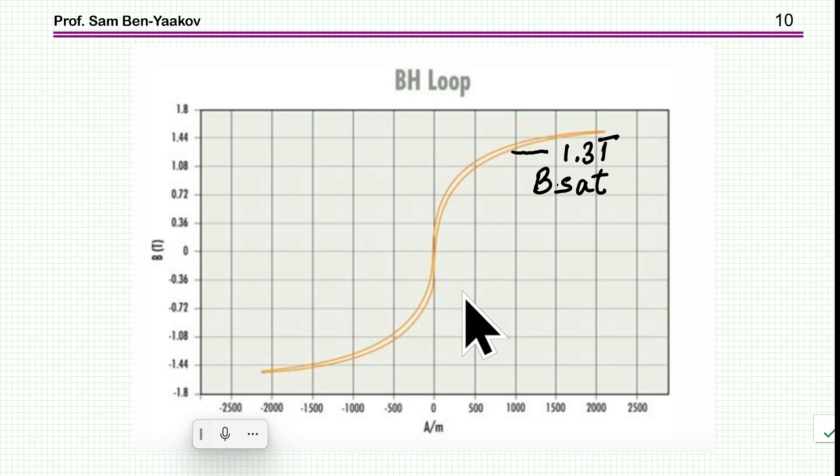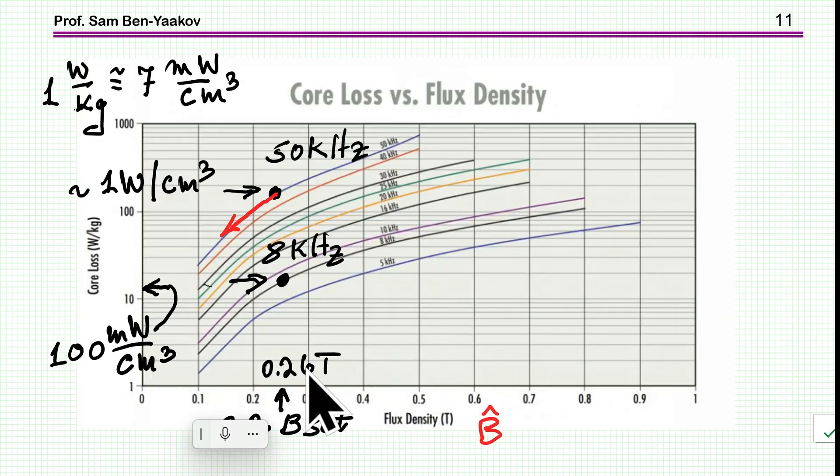If I'm setting the B ripple to be 0.2 of this level, this will be 0.26. And here are the losses. I can see that we're in bad shape here. For example, if I'm talking about the level of around 100 milliwatt per centimeter square, it's only 8 kilohertz. If I go to 50 kilohertz, then it's 1 watt per centimeter square. This is given in watt per kilogram, which I've converted to something more friendly: watt per centimeter or milliwatt per centimeter. With the 0.26 at 50 kilohertz, fairly low frequency, we're already getting something like 1 watt per centimeter square.